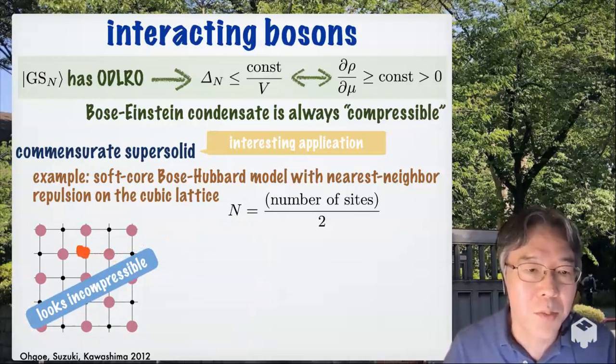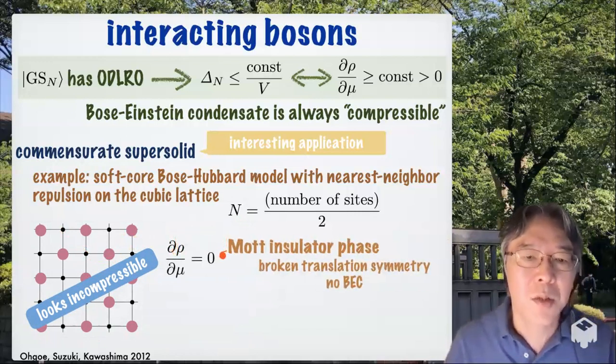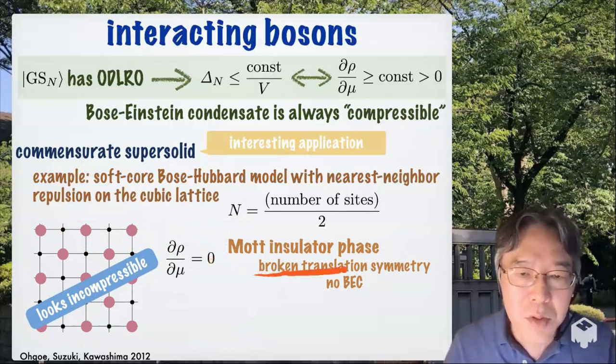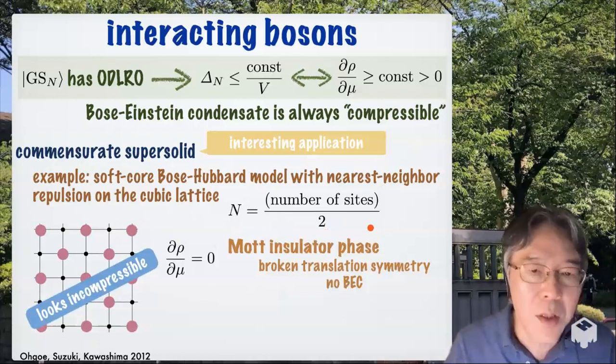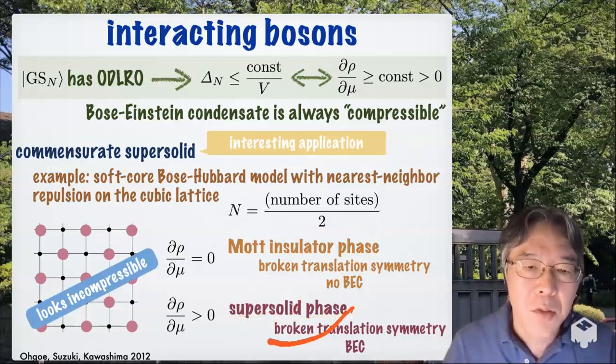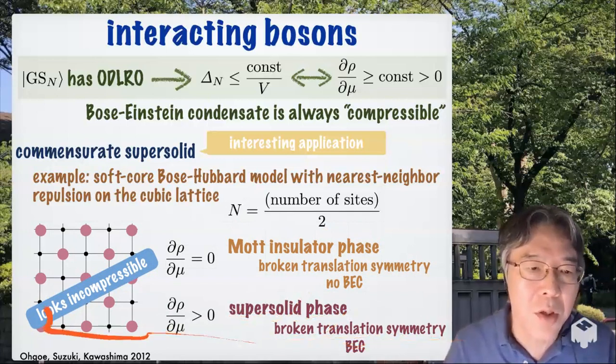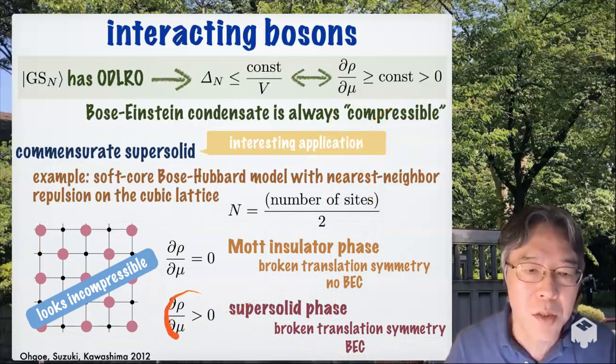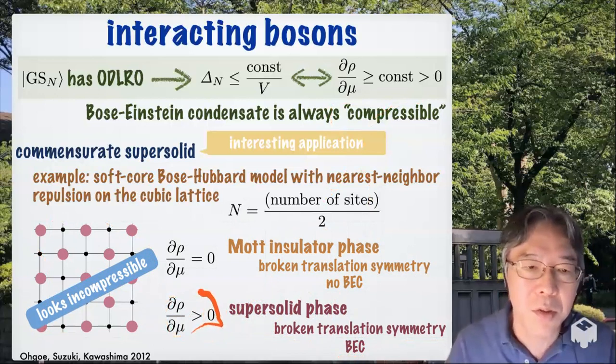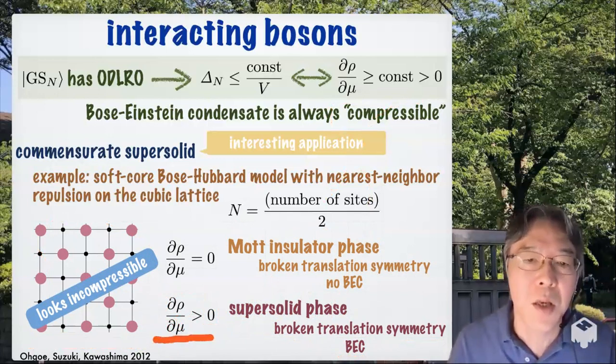And this guess, this intuition is correct. If the ground state is in the Mott insulator phase where you have broken translation symmetry, so you have a solid like this, and also you don't have any BEC. But the same system with the same condition can be in a phase called a supersolid phase where the translation symmetry is still broken. So you have a solid like this, but you also have Bose-Einstein condensation. Then our inequality said that this is compressible like this. This is very surprising. This is a surprising conclusion. But if you look at, for example, a numerical simulation in this paper, you clearly see this behavior. So it's true.